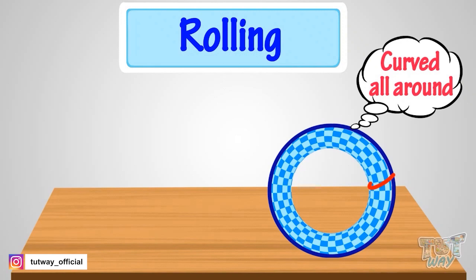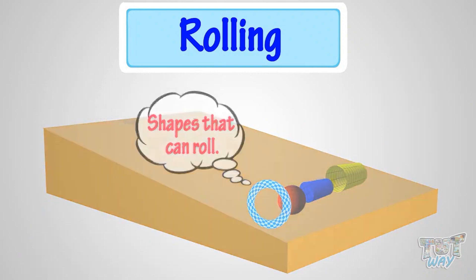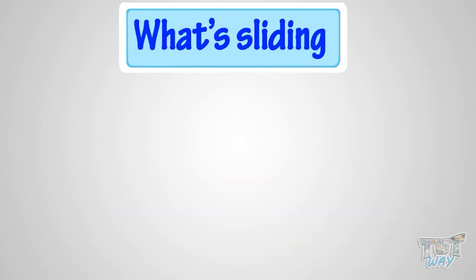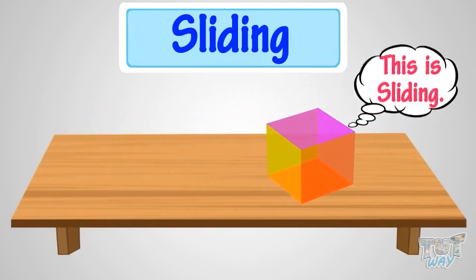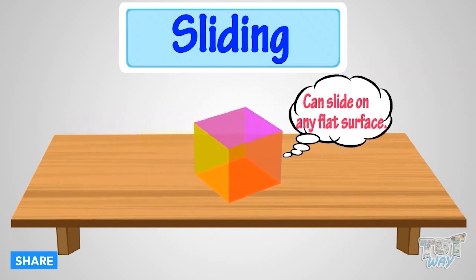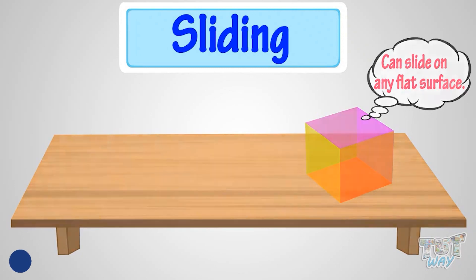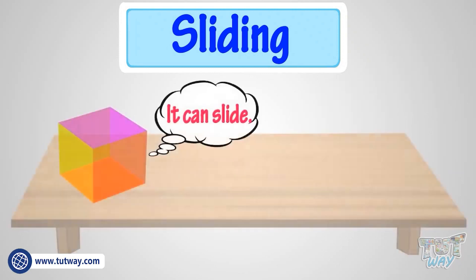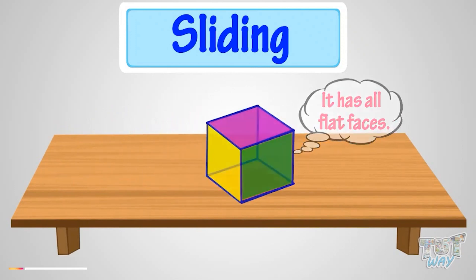So kids, we learned what's rolling and a few shapes that can roll. Now we will learn what's sliding. This is sliding — any object that has at least one flat face can slide on any flat surface. Now let's see shapes that can slide. This is a cube — it can slide as it has all flat faces.